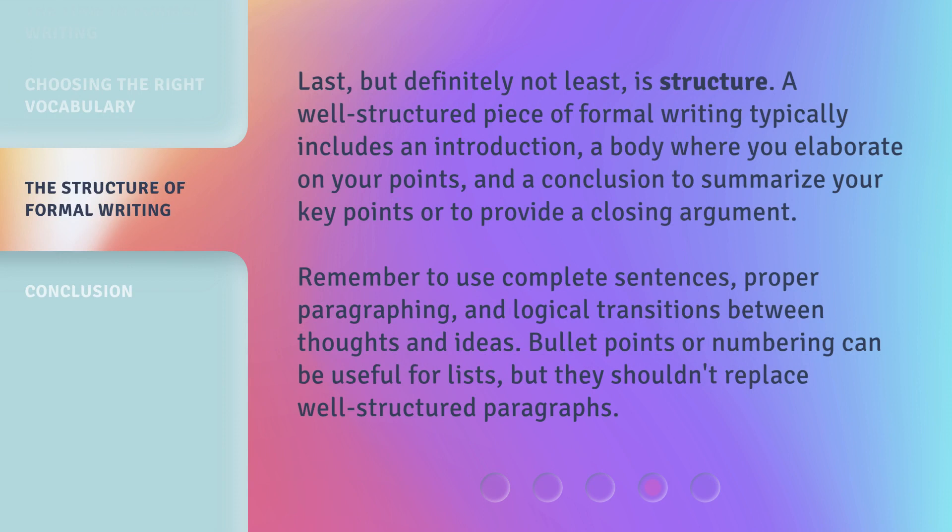Last, but definitely not least, is structure. A well-structured piece of formal writing typically includes an introduction, a body where you elaborate on your points, and a conclusion to summarize your key points or to provide a closing argument. Remember to use complete sentences, proper paragraphing, and logical transitions between thoughts and ideas. Bullet points or numbering can be useful for lists, but they shouldn't replace well-structured paragraphs.